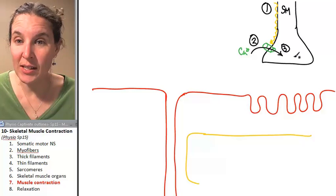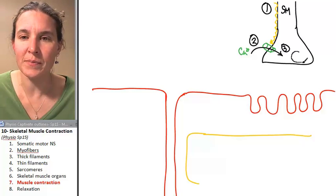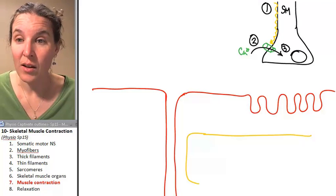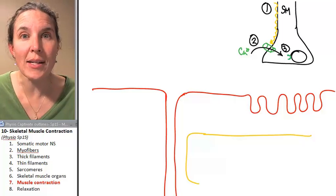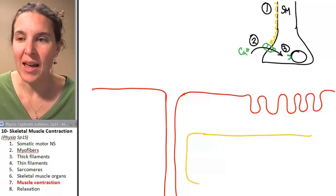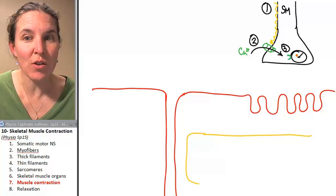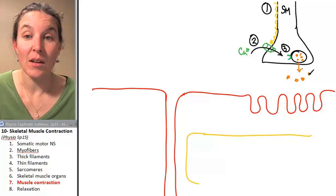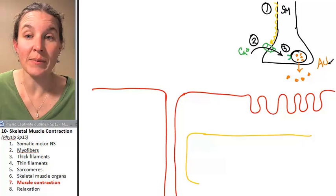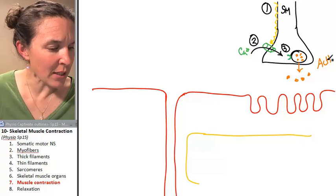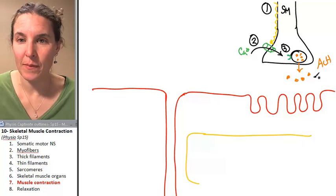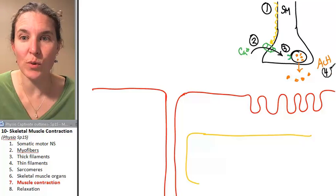After calcium rushes in, calcium is going to do what? It's all familiar. Calcium is going to stimulate exocytosis of vesicles that are holding what? Neurotransmitter. And you know this, too. Who's the neurotransmitter inside this vesicle? Acetylcholine. So this is acetylcholine. And it's released in the, okay, that's cool. That's number four.